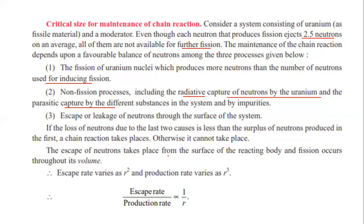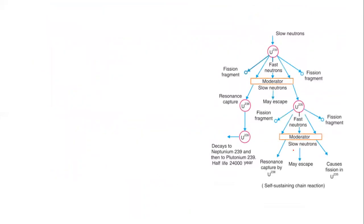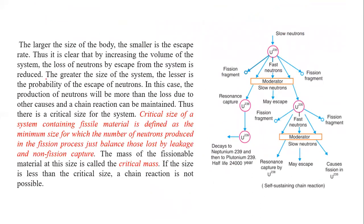Escape or leakage of neutrons occurs through the surface of the reacting body, while fission occurs through its volume. The escape rate varies inversely with the radius, so the larger the size of the body, the smaller is the escape rate. Thus, by increasing the volume of the system, the loss of neutrons by escaping from the system is reduced. If the production of neutrons is more than the loss, a chain reaction can be maintained.